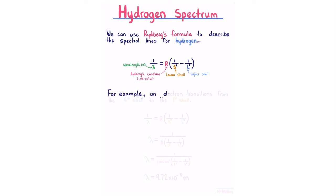For example, an electron transitions from the 4th shell to the 1st. We start with our equation, solve it for lambda, substitute in our numbers, and get 9.72 times 10 to the minus 8 meters for our wavelength.